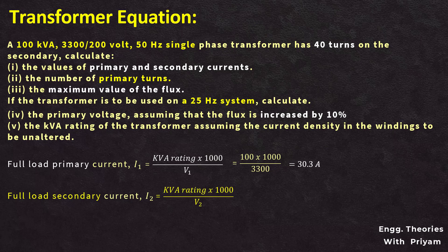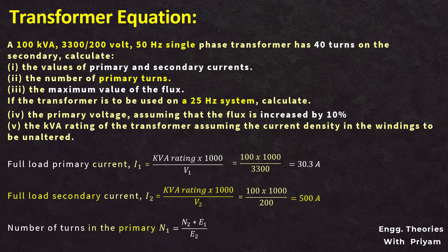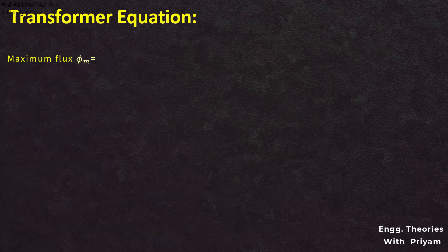The full load secondary current I2 equals the kVA rating × 1000 divided by V2, giving I2 = 500 ampere. From the voltage transformation ratio N2 by N1 equals E2 by E1, with N2 = 40, E1 = 3300, and E2 = 200, we can determine N1 = 660 turns. The maximum flux φm equals E2 divided by 4.44 into N2 into f. With E2 = 200, N2 = 40, and f = 50 Hz, this results in φm = 0.0225 Weber.